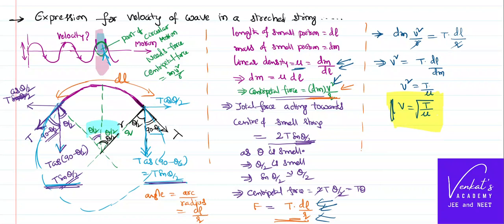The entire derivation simply depends on one key point: whenever there is oscillatory motion, it is a part of circular motion and must have a certain centripetal force. I found that centripetal force and equated both expressions. That is how we derive the expression for the velocity of a wave in a stretched string: v equals root of tension by linear density. Thank you for watching.